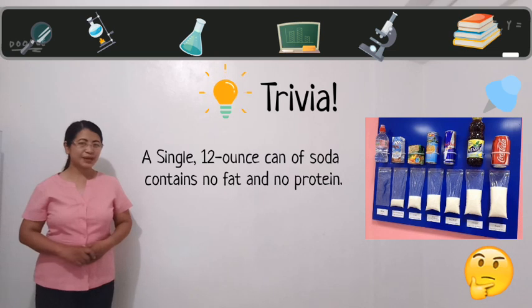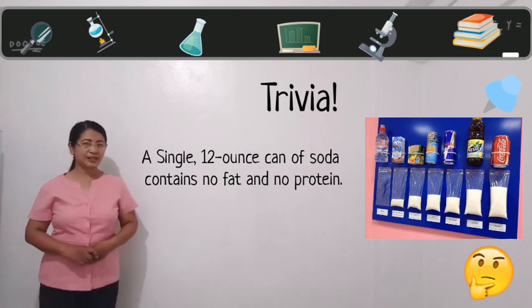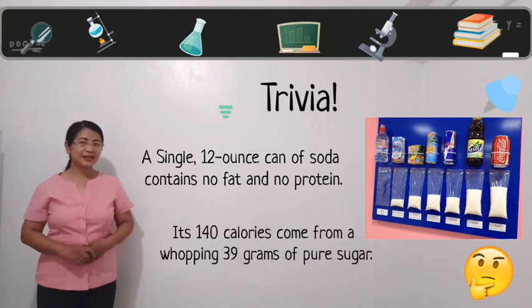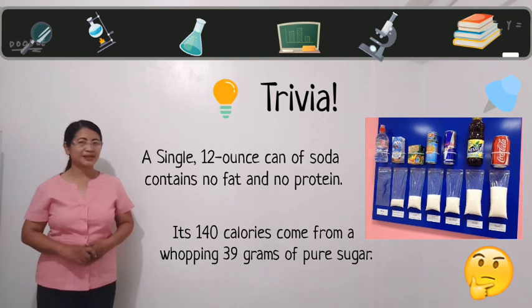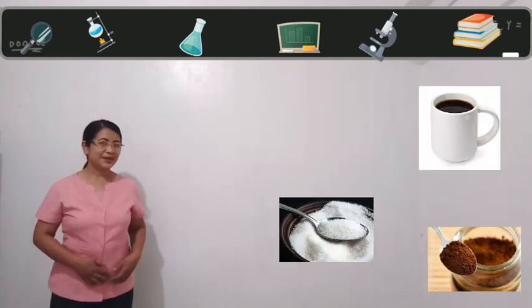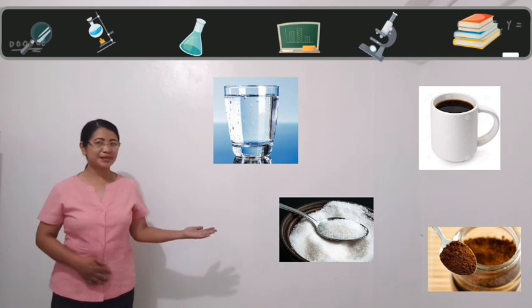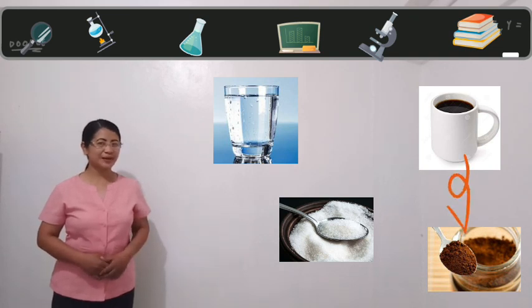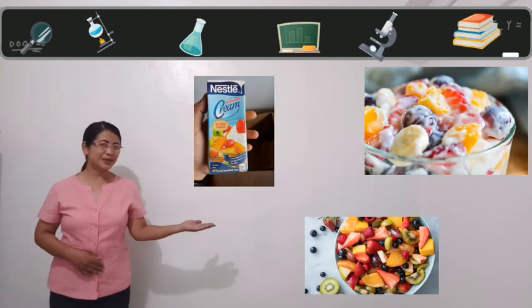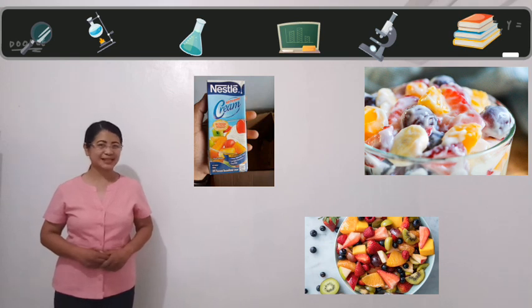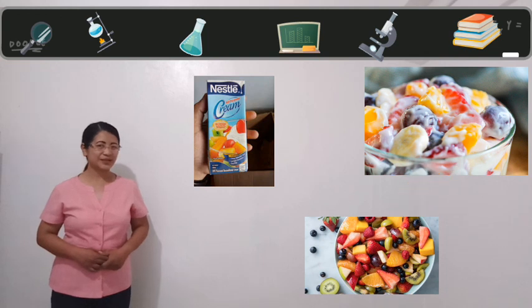A single 12-ounce can of soda contains no fat and no protein. Its 140 calories come from a whopping 39 grams of pure sugar. Your morning coffee is a mixture of coffee powder, sugar, and water. Your bowl of creamy fruit salad is a mixture of different substances like all-purpose cream and different kinds of fruits.